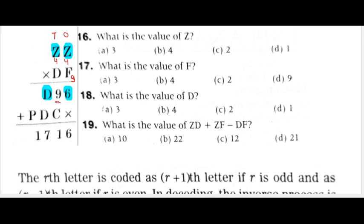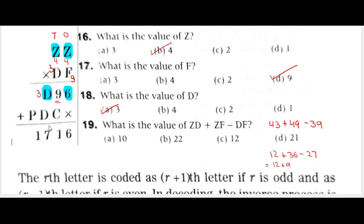Let's check: Z = 4, F = 9, and 9 × 4 = 36, carry 3, so D = 3. ZD = 43, ZF = 49, DF = 39. Multiplying gives 12 + 36 − 27 = 21. That's coming through multiplication — it checks out.